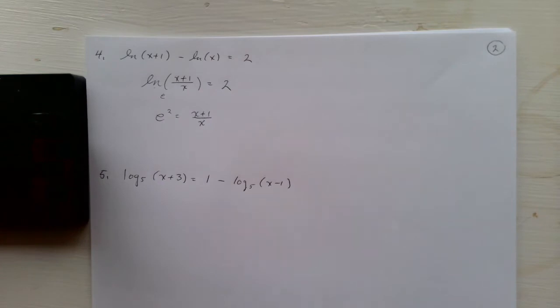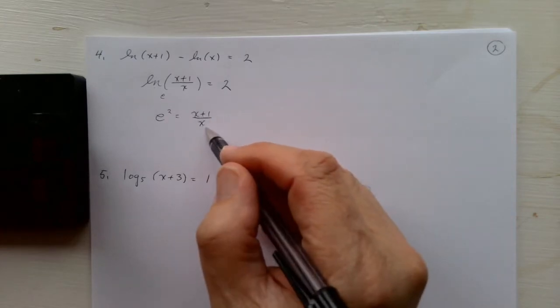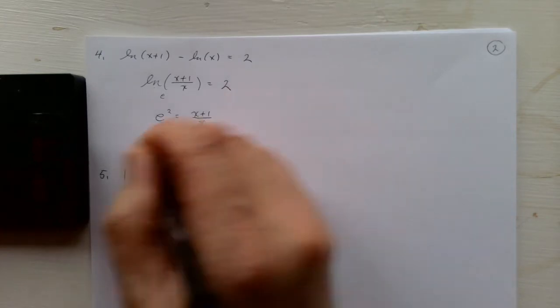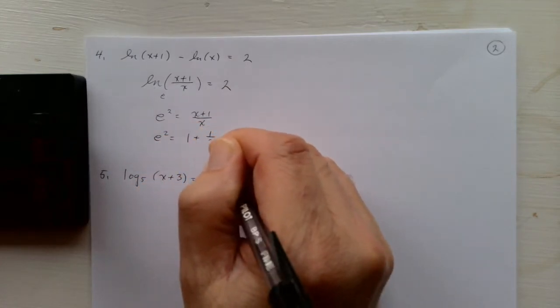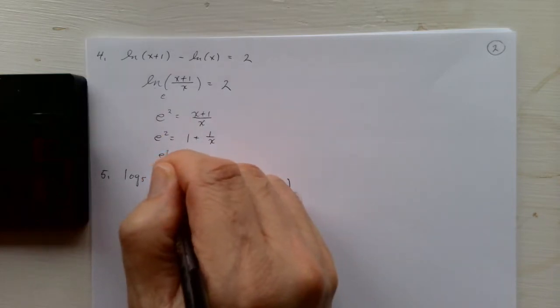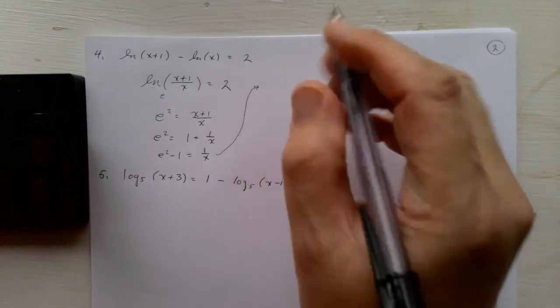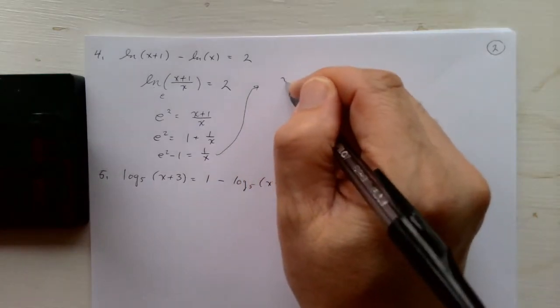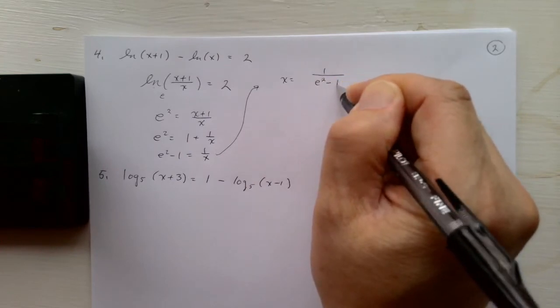We can solve this a couple ways. We could simplify this as x over x plus 1 over x, so this will be e squared equals 1 plus 1 over x. Subtract 1 from both sides, and then take the reciprocal of both sides. And so x will be 1 over e squared minus 1.